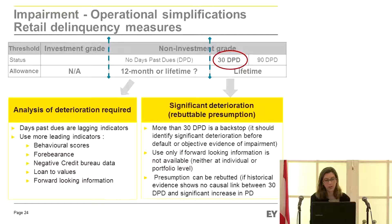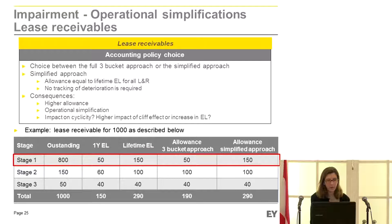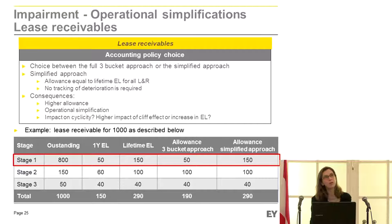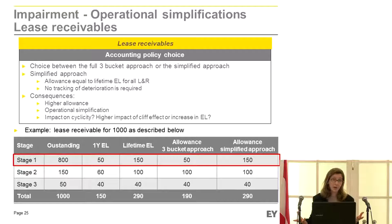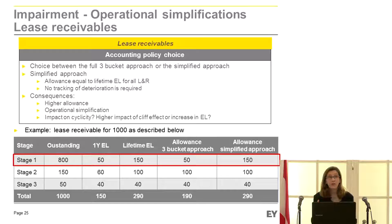There is a simplification for trade receivables and lease receivables: banks or corporates are allowed to book only lifetime expected losses — skipping the Stage 1/Stage 2 distinction. This is simpler operationally, but it means the impairment allowance is immediately larger since you provide for the entire lifetime expected loss at origination. The only advantage is you don't have to track deterioration, as there is one single measure for the full life of the exposure.